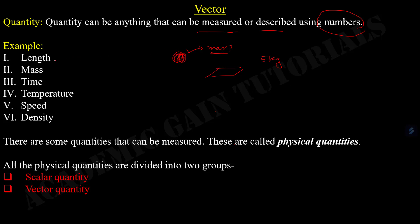In similar ways, length, mass, time, temperature, speed, density, etc. — there are many examples, all are quantities. There are some quantities that can be measured; these are called physical quantities.